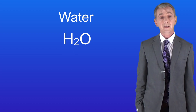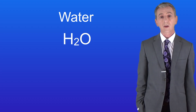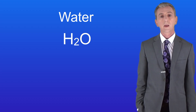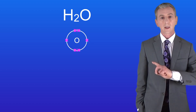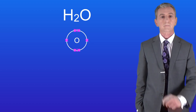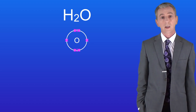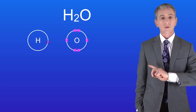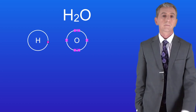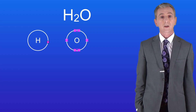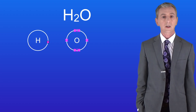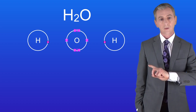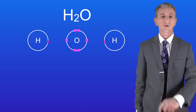Oxygen has eight electrons in total, which means that it's got six electrons in its outer energy level. I'm showing you the oxygen atom here. Hydrogen only has one electron, so here's the hydrogen atom. The formula for water tells us that the water molecule contains two hydrogen atoms, so here's the second hydrogen atom.